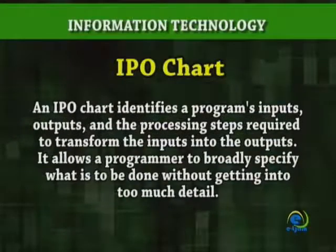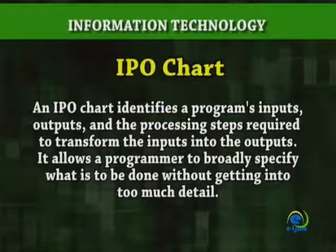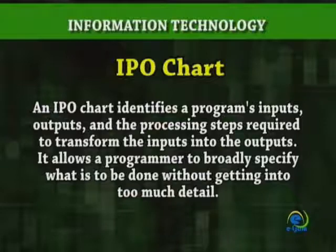An IPO chart identifies a program's inputs, outputs, and the processing steps required to transform the inputs into the outputs. It allows the programmer to broadly specify what is to be done without getting into too much detail.